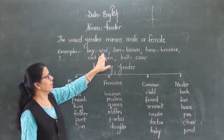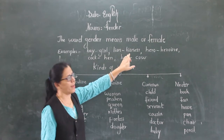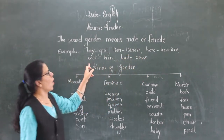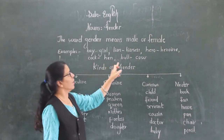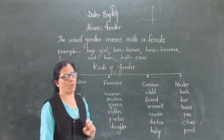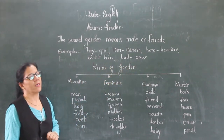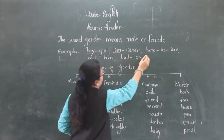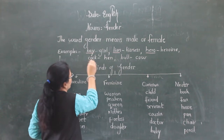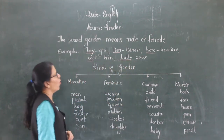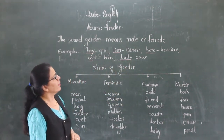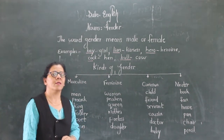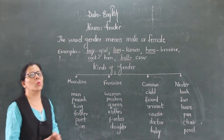Boy, girl, lion, lioness, hero, heroine, cock, hen, bull, cow. Now see the first word of each pair — that is boy, lion, hero, cock, bull. These are the words which denote male.